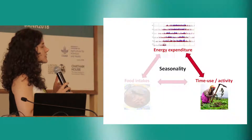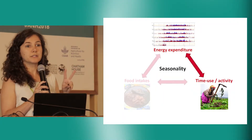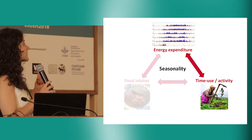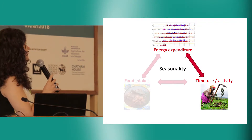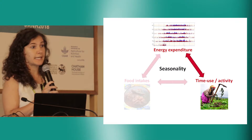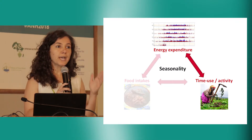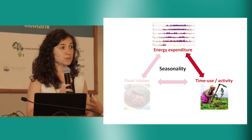We have also deployed two other different instruments. We collected time use surveys — 24-hour recall time use surveys — and 24-hour recall food intake data for every day that the accelerometer device was worn. In this way, we are able to triangulate these different sources of data and analyze the seasonal pattern and tensions between different productive and reproductive activities of rural livelihoods.